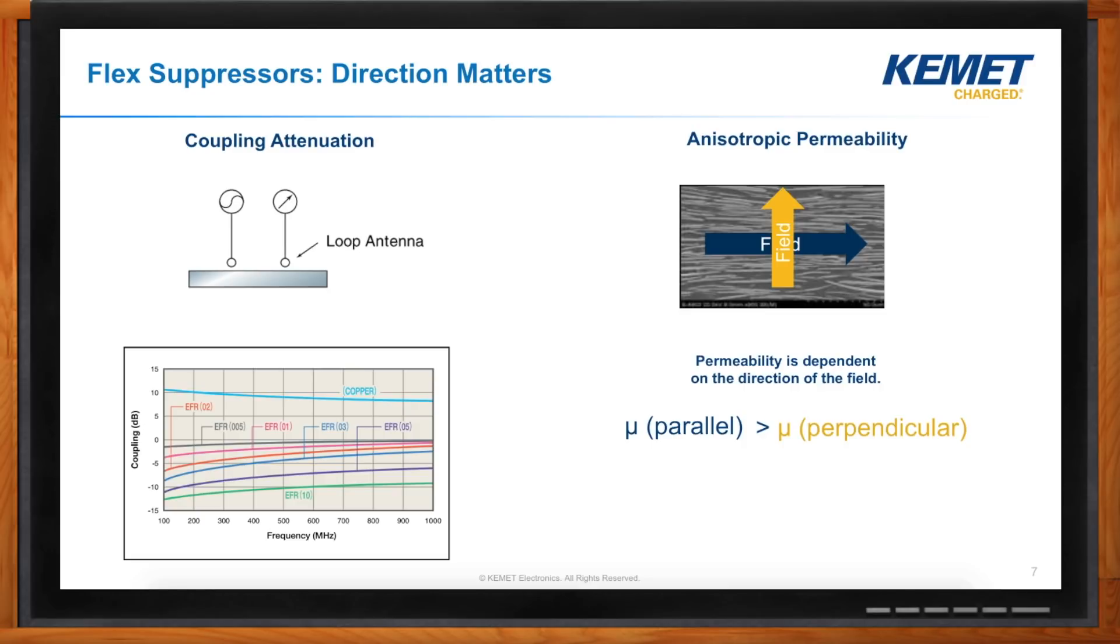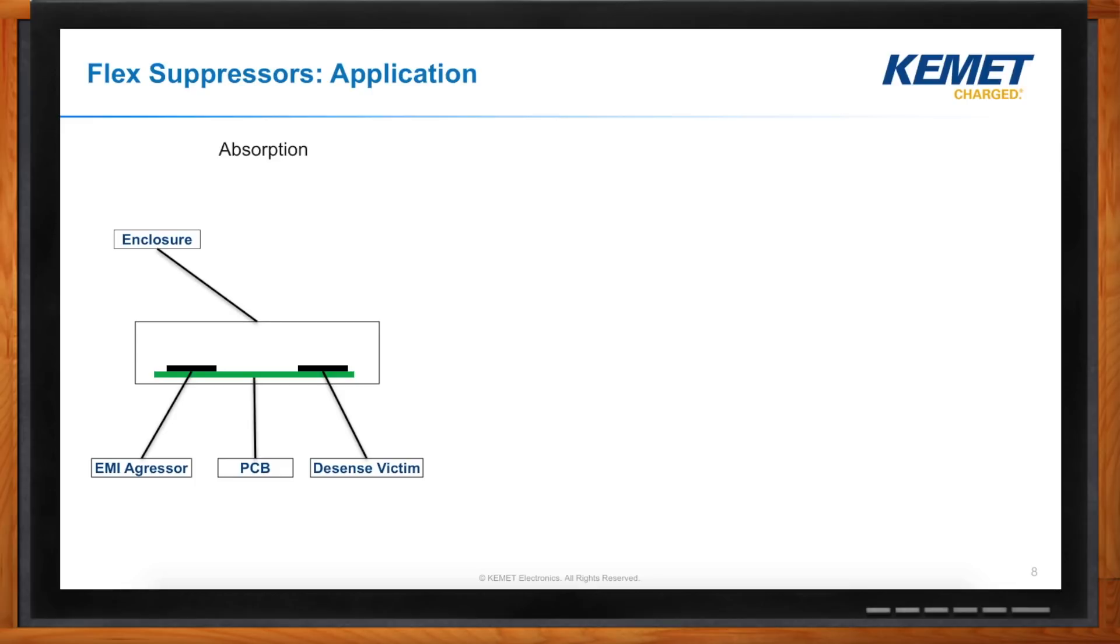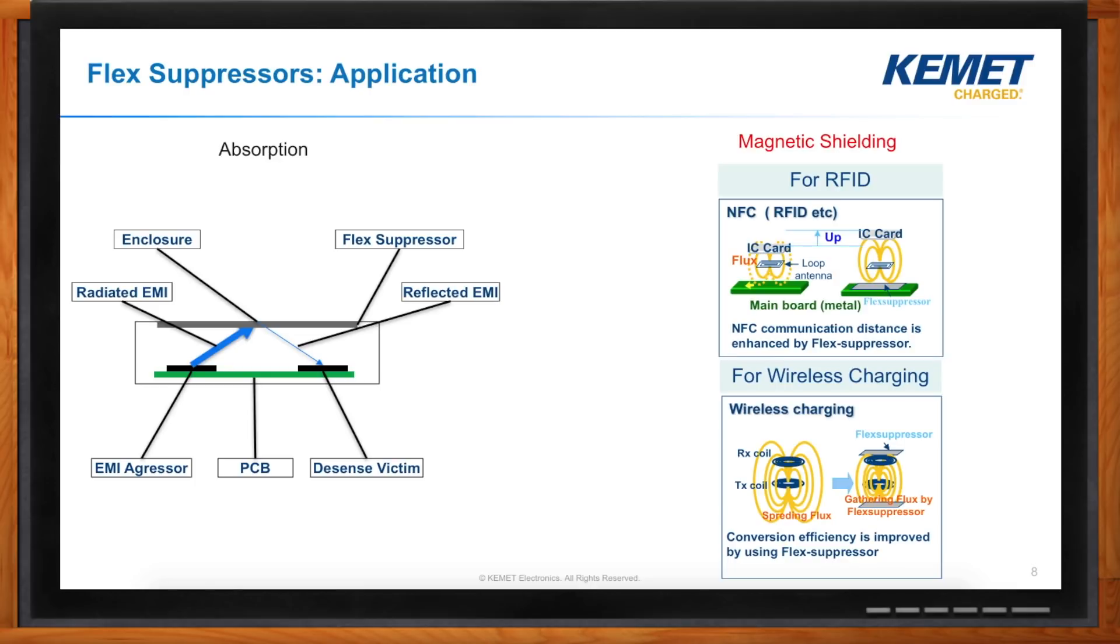Okay, cool. So, how do I use these things? Okay, yeah. So, imagine you have a circuit board with a device that is radiating EMI and there's other devices nearby that are sensitive to EMI. So, that EMI aggressor will radiate some noise and it will reflect off of the internal enclosure and affect the device that's sensitive to EMI. But if you place the flex suppressor material on the inside of the enclosure, a lot of that radiated EMI will be absorbed by the flex suppressor material and no longer have a significant impact on the device that is sensitive to EMI.